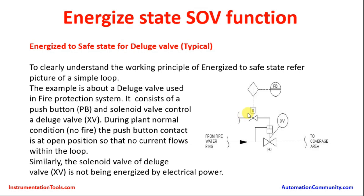During plant normal condition, whenever there is no fire, the push button contact is at open position, so no current flows within the loop. The push button is at open position, so no current passes through it and goes to the solenoid to make it open.